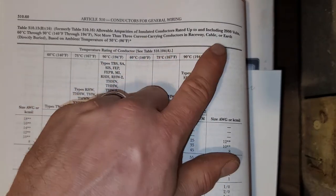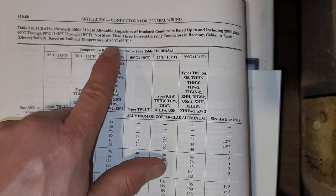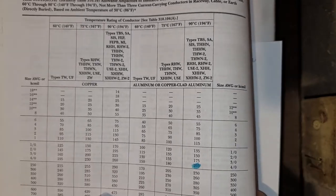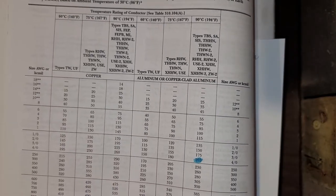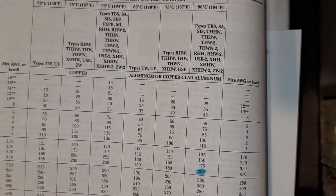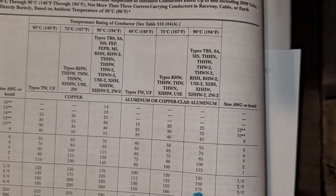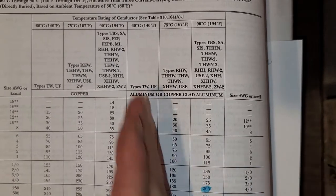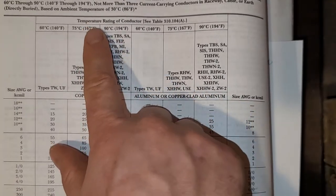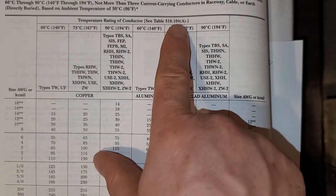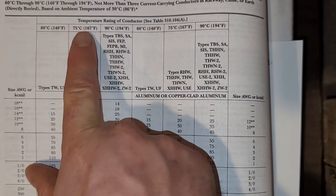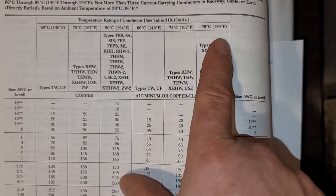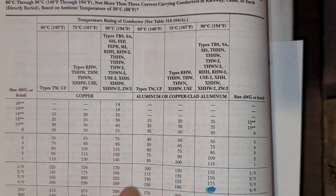If it's outside the parameters of three conductors or outside of 86 degrees, we'll use the last two tables to make adjustments and corrections. Across the top are the temperature ratings of conductors: 60, 75, and 90 — but you notice it repeats: 60, 75, and 90 again. There's actually a dividing line through this table because it switches between copper on one side and aluminum/copper-clad on the other.